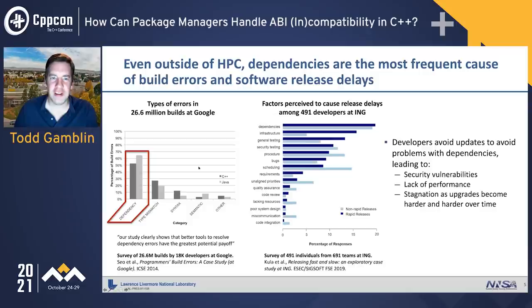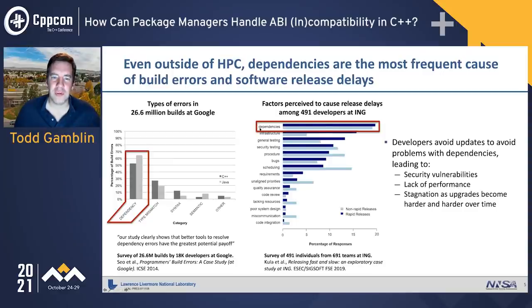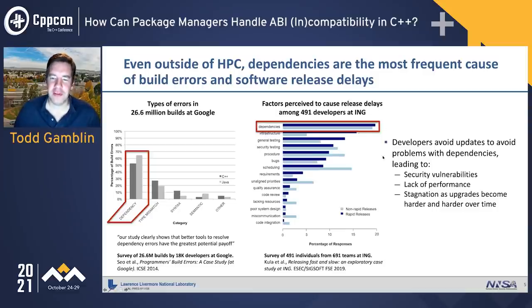At ING, things were similar. A study about whether releasing fast or slow would help a team reduce issues during releases found that dependencies were the top culprit for delaying releases, regardless of whether the team did rapid or non-rapid releases.